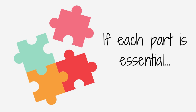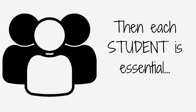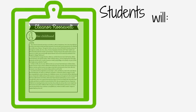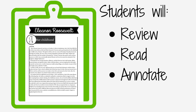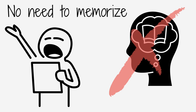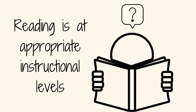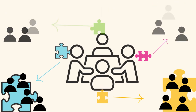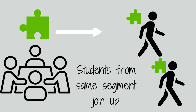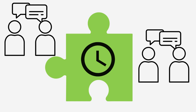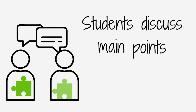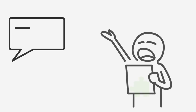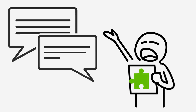If each student's part is essential, then each student is essential, and that is precisely what makes this strategy so effective. Give students time to review, read, and annotate their segment at least twice and become familiar with it, but assure them that there is no need to memorize it. It is important that the reading material assigned is at an appropriate instructional level. Now, have students form temporary expert groups by having one student from each jigsaw group join other students assigned to the same segment. Give students in these expert groups time to discuss the main points of their segment, providing key questions to help them gather information in their particular area. They also need time to rehearse the presentations they will make to their jigsaw group.